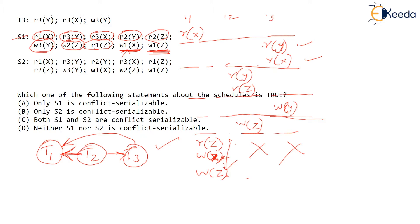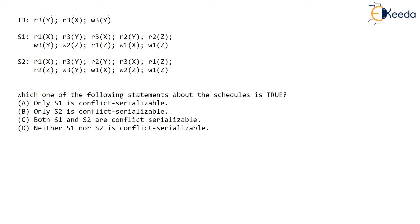This is the precedence graph we get, and clearly this graph does not have any cycles. So S1 is definitely conflict serializable. Now, is S2 also conflict serializable? Let's find out.